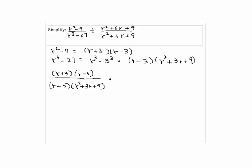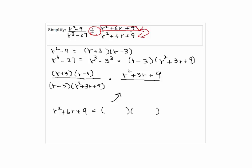We are going to flip the numerator and denominator of the second fraction since we have a division. So we have r squared plus 3r plus 9 on top. We can factor r squared plus 6r plus 9 as r plus 3 times r plus 3, and that will go on the bottom.